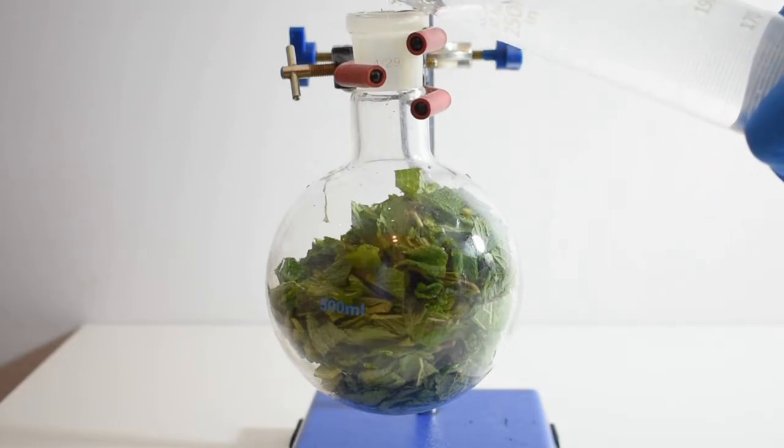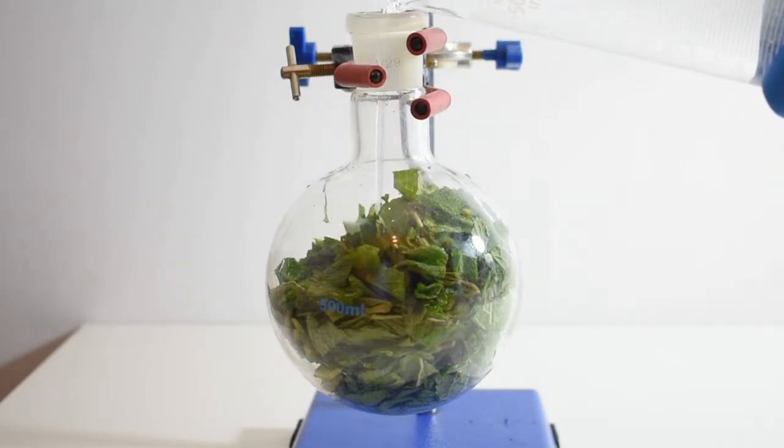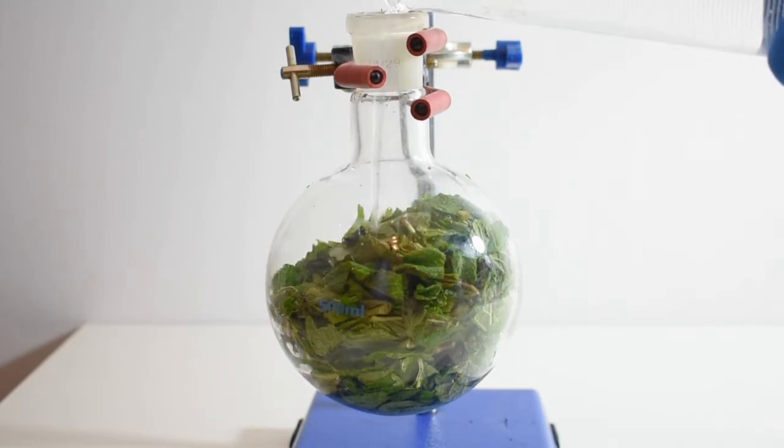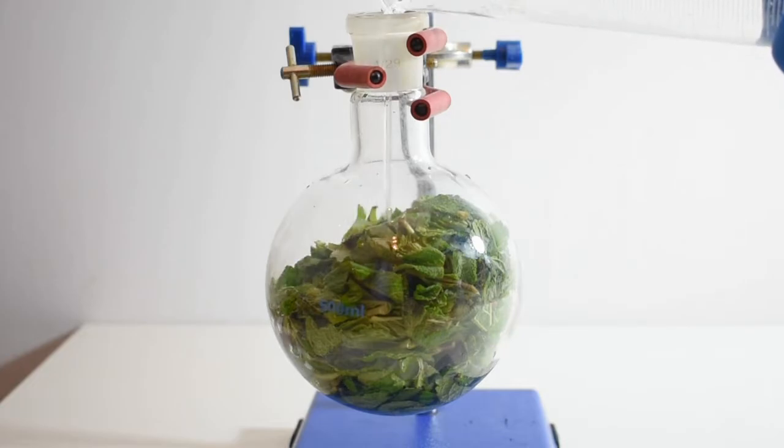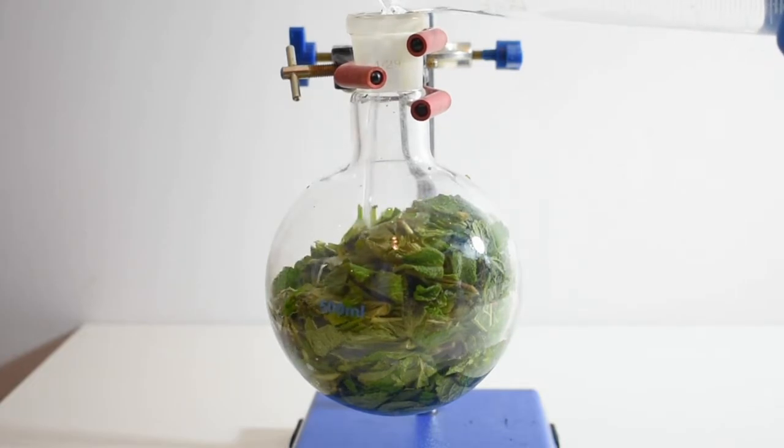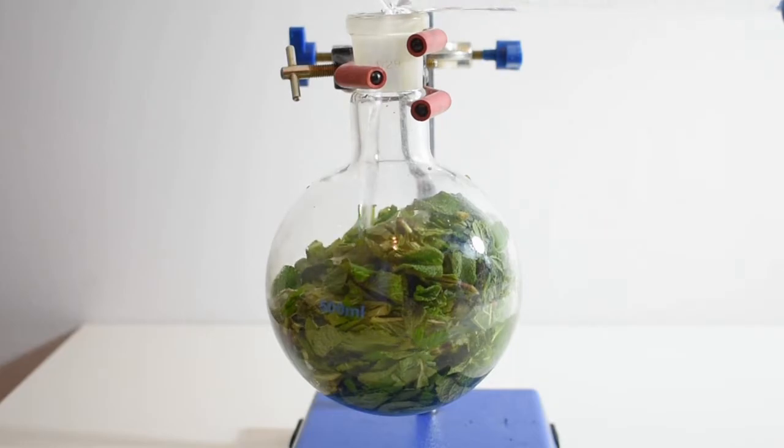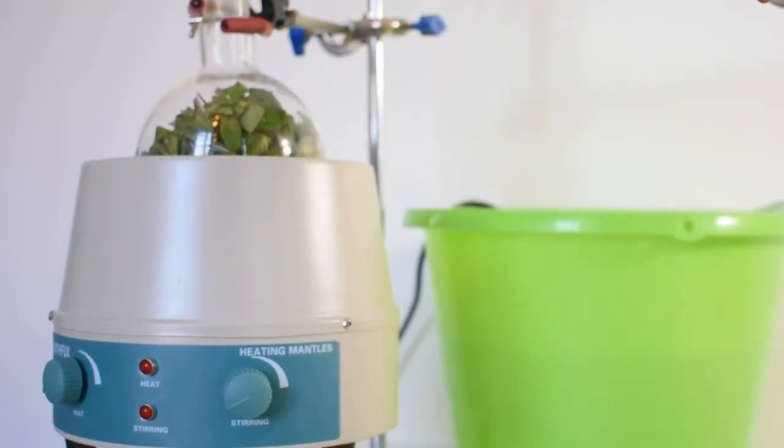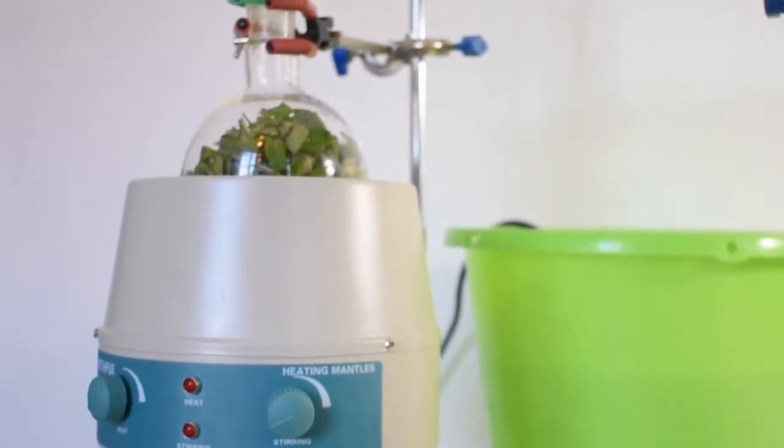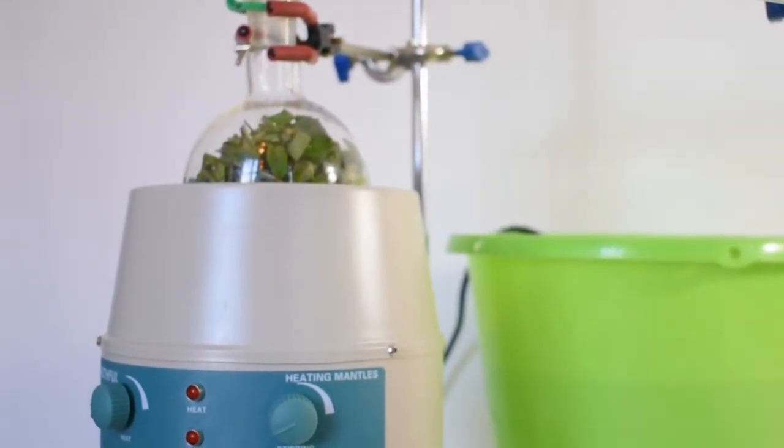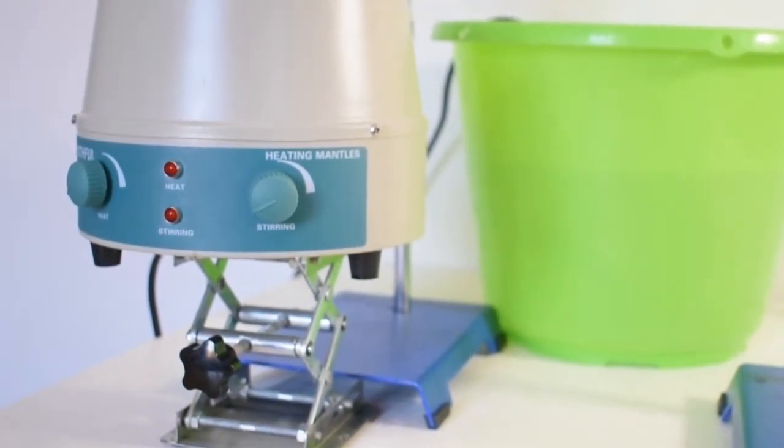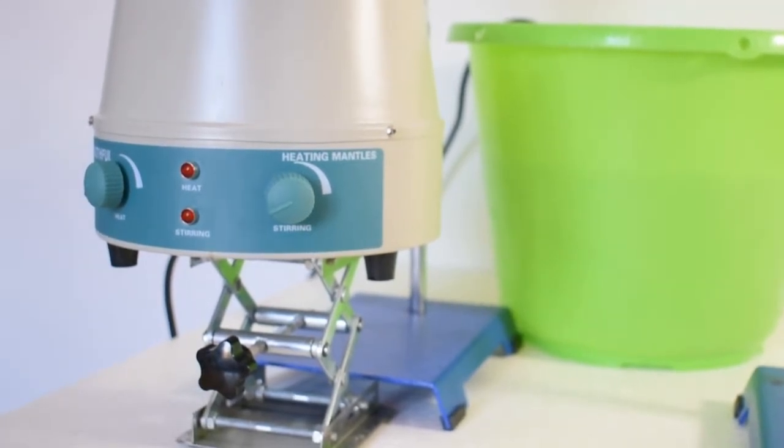About 250ml of water is added to the flask as well. This water will act as the carrier for the oils in the steam distillation. The flask with the mint and water is sitting in a heating mantle. The heating mantle is on this jack so it can be lowered to reduce heating in case of the flask boiling over.